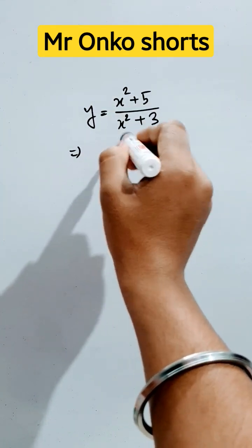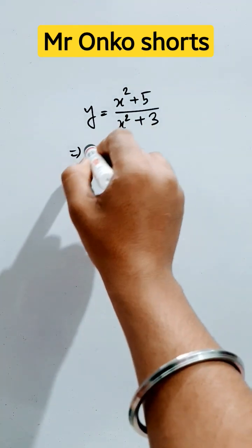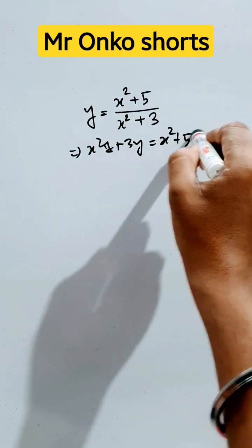So first of all, arrange this and form it as a function of y. So x square y plus 3y is equals to x square plus 5.